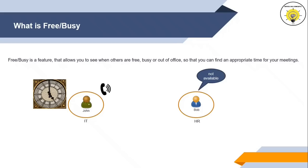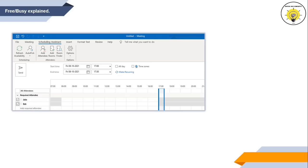This is where FreeBusy comes into the picture. To check Bob's availability, John will log in to his Outlook client. He will create a meeting, add Bob as an attendee in Scheduling Assistant, and he will be able to check if Bob is available at 5pm or not. If Bob is available, John will schedule the meeting; if Bob is busy, John will have to reschedule. Now let's understand how to identify if someone is free or busy.